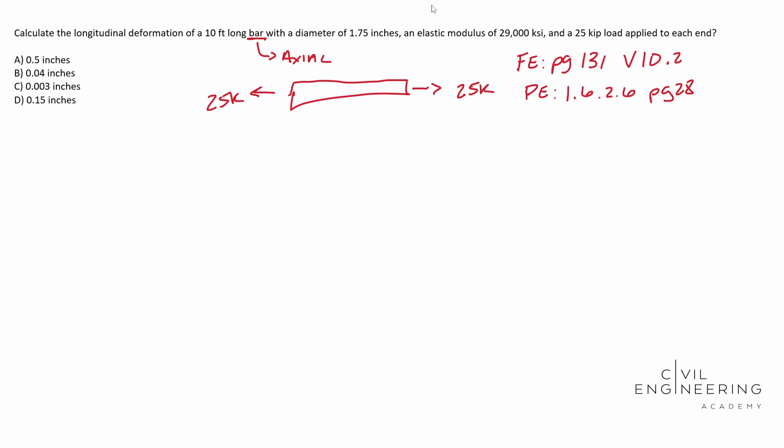Alright. So when you look at that, you'll find that the deformation, delta, is equal to PL over AE. So you have your load times your length of your bar over the cross-sectional area of your bar. And we're going to multiply that on the denominator by the elastic modulus. So yeah, let's go ahead and plug and chug.